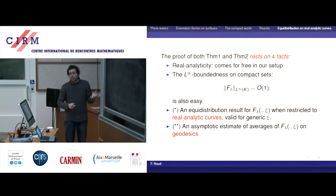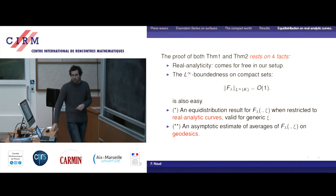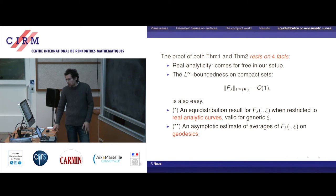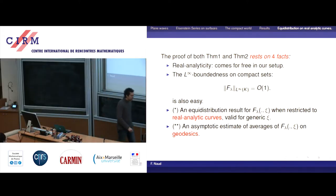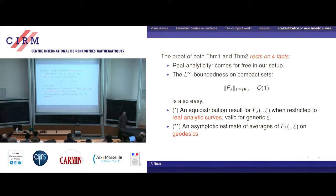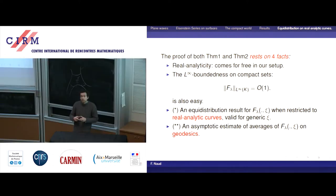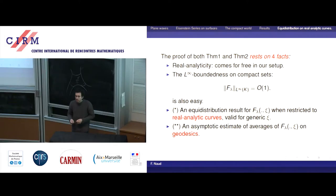Real analyticity is the first ingredient — you really need it for upper bounds. For the lower bounds, it's very helpful at the technical level but probably not strictly necessary; you can work with smooth curves. But for the upper bounds, I don't know how to do it without real analyticity. Another ingredient, which is quite striking and very easy to prove, and which makes all the difference between the compact setting and this setting, is that on a compact set these eigenfunctions are L-infinity bounded. They are bounded on every compact set — something you do not have on compact manifolds. This is very helpful and probably one of the main reasons we are able to prove optimal lower bounds.